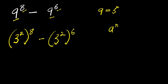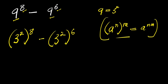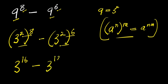Now if you have a to the power of n raised to the power of m, that equals a to the power of n times m. We apply this identity here and here — we multiply these exponents — so we have 3 to the power of 16, minus 3 to the power of 12.